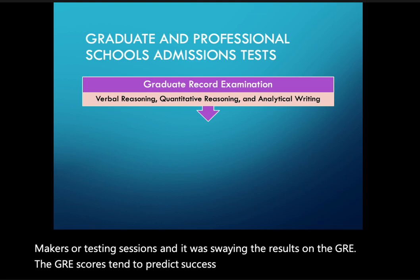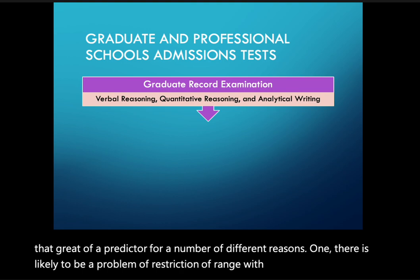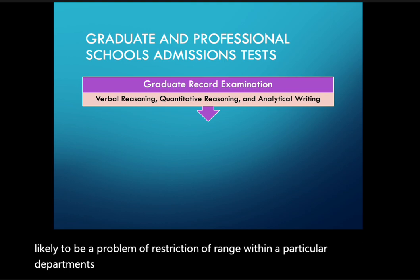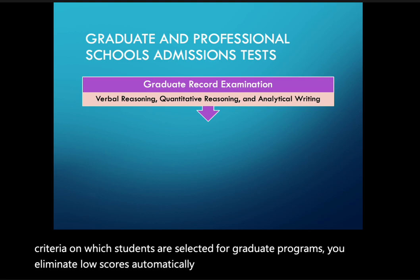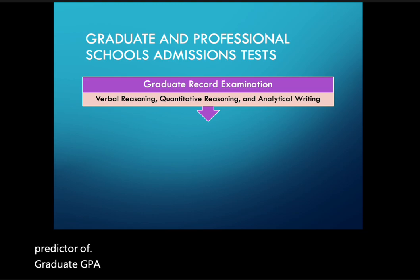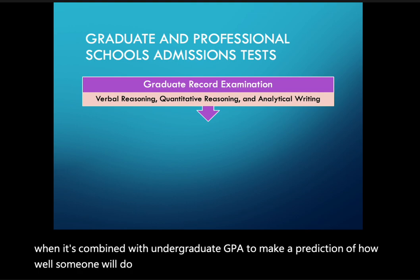GRE scores tend to predict success in graduate school, but it's not a great predictor for several reasons. First, there is likely a restriction of range problem within particular departments, because GRE scores and undergraduate GPAs are the major criteria for selecting students — low scores are automatically eliminated. The GRE is still considered a valid predictor of graduate GPA even with this restriction, and it's most predictive when combined with undergraduate GPA.